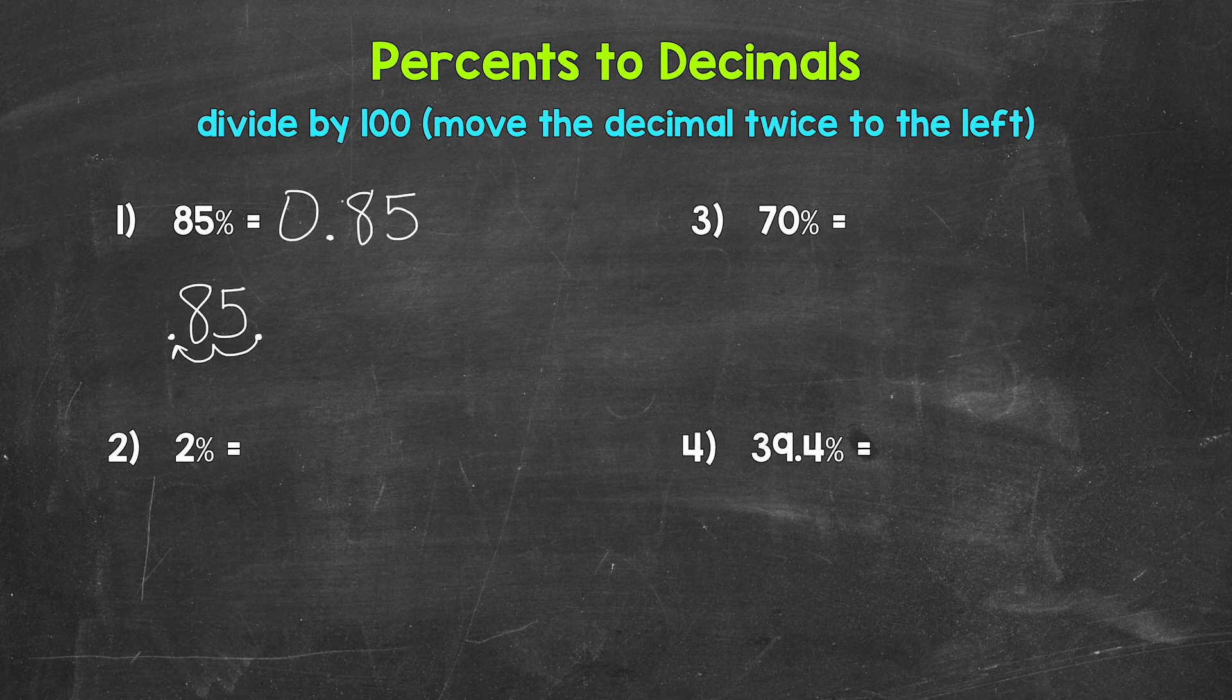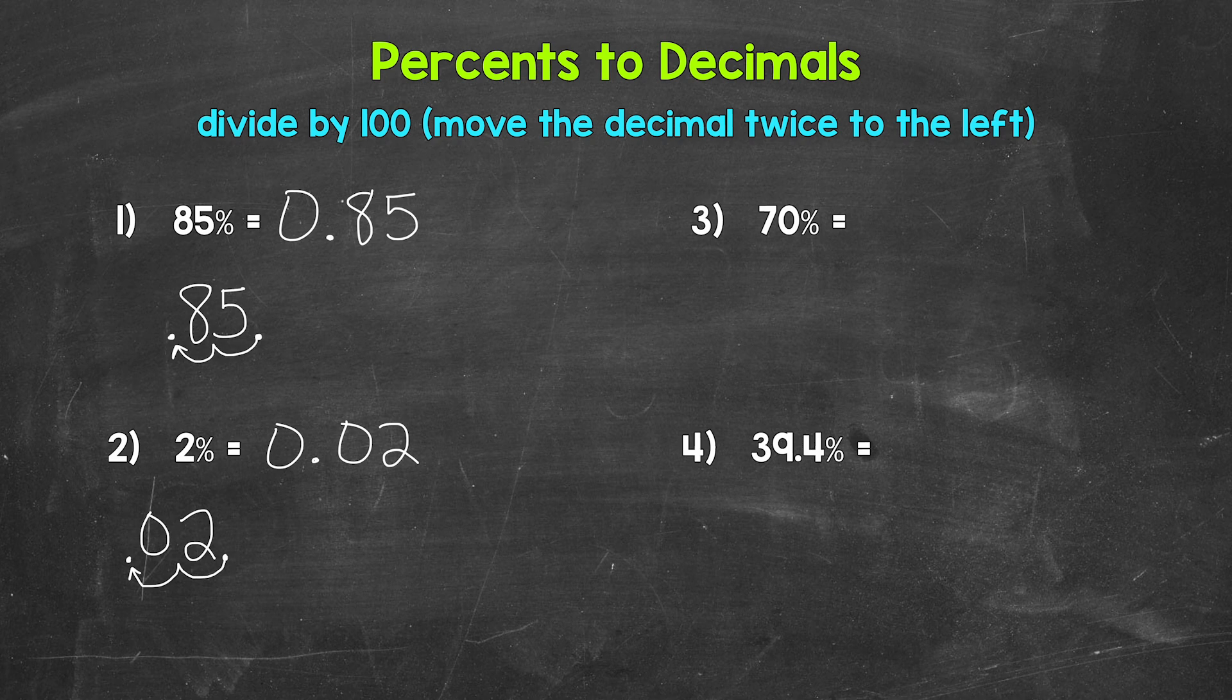Let's move on to number two, where we have 2%. I'm going to rewrite this underneath with a decimal, and now we need to divide by 100. So let's move the decimal once, twice to the left, and we need to fill this gap, this place, with a zero. So we get 0.02. 2% equals 0.02, two hundredths as a decimal.